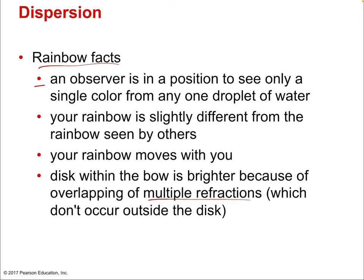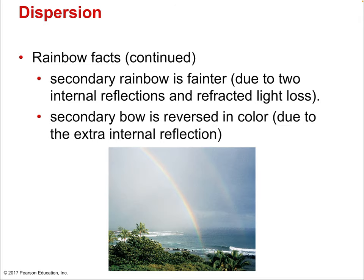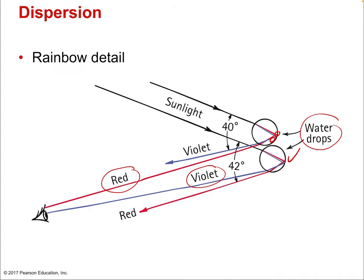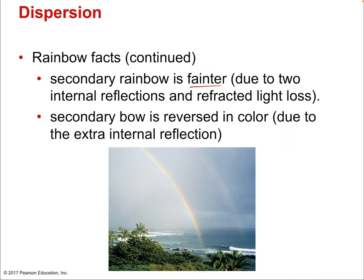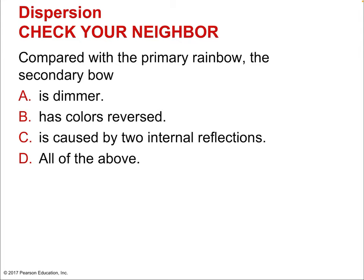Some facts about rainbows: an observer can see only a single color from any one droplet of water — for example, we see red from the upper droplet and violet from the lower droplet. Your rainbow is slightly different from the rainbow seen by others because they're in a different location — your rainbow moves with you. The disc within the bow is brighter because of overlapping multiple refractions reinforcing each other, which don't occur outside the disc. There is also such a thing as a secondary rainbow — always fainter due to two internal reflections, requiring droplets behind the original ones. The secondary rainbow always has its colors reversed, with red on the inner side of the arc rather than the outside. Compared with the primary rainbow, the secondary bow is dimmer, has colors reversed, and is caused by two internal reflections — all of the above.